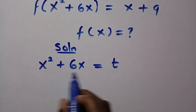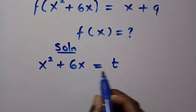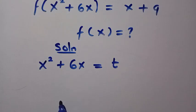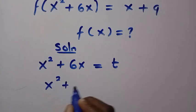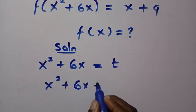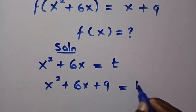So what we do is add 9 to both sides. This is completing the square. By adding 9 to both sides, we have x² + 6x + 9 = t + 9.